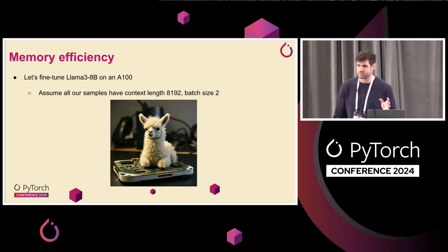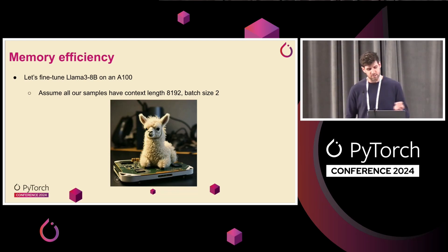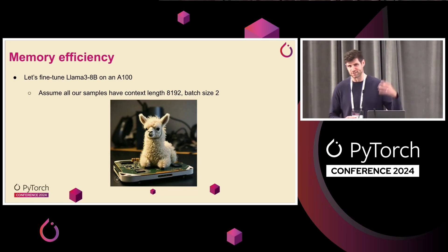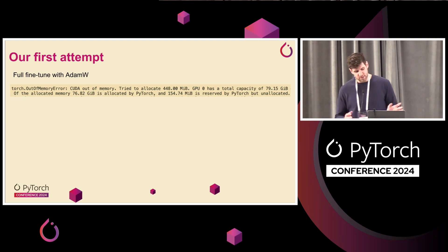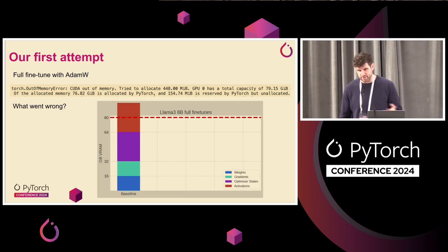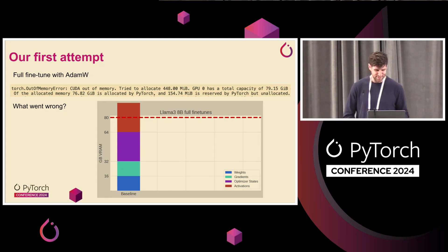So that's some aspects of the design of TorchTune. Let's do a little case study on different memory efficiency levers we can pull in the library. Let's say we have a synthetic dataset, context length 8K, batch size 2, and we're going to fine-tune Llama 3-8B on an A100. We're just going to start by doing the dumb thing — full fine-tune, AdamW, BF16. We don't have enough memory to do this; it takes more than 80 gigs. We have 16 gigs weights, 16 gigs gradients, 32 in optimizer state, and some number greater than 16 for activations.